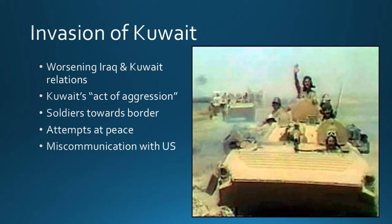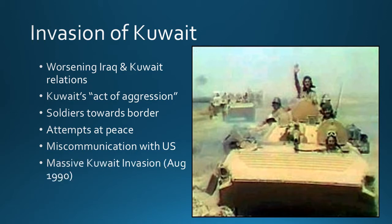Miscommunication was also a major factor. Saddam met with a U.S. ambassador and incorrectly concluded that if he invaded Kuwait, the United States was not going to take action. This gave Saddam the green light. In August of 1990, he sent in a massive amount of soldiers, tanks, etc. to overtake Kuwait. Within a few weeks, Iraq took over Kuwait. The royal family ruling Kuwait had to flee the country for their safety, and Iraq claimed Kuwait as their own. The Kuwait military was no match for the Iraqi military.